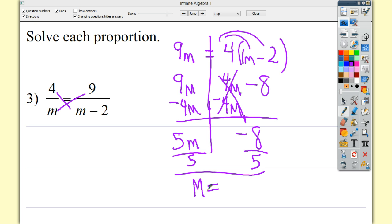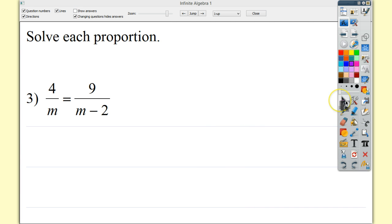So, negative 8 over 5 is actually reduced as far down as it will go, unless you want to make it negative 1 and 3 fifths or something like that. That's up to you. But the issue here is that you had m on both sides or variable on both sides of the equation. So just move it over, regular solving the equation stuff. These type of problems generally come at the end of a solving equation section.